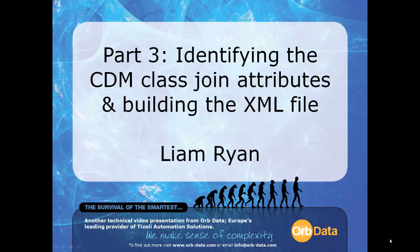Part 2 in this series of four videos walked you through how you can use the CDM website to obtain the relevant attribute and class name information needed to define your custom view. This video will show you how you can identify the join criteria to glue these separate classes and attributes into a single custom view, and walk you through creating an XML file which can be used to generate our example custom view.